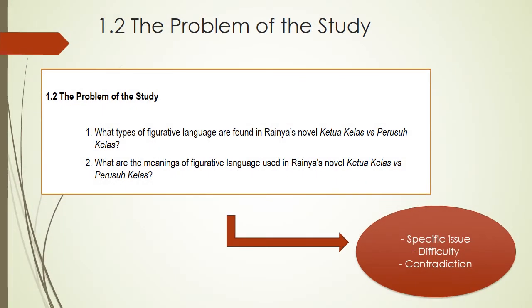The problem of the study: a research problem is a specific issue, difficulty, contradiction, or gap in knowledge that you will aim to address in your research. You might look for practical problems aimed at contributing to change, or theoretical problems aimed at expanding knowledge. Bear in mind that some research will do both, but usually the research problem focuses on one or the other. The type of research problem you choose depends on your broad topic of interest and the type of research you want to do.